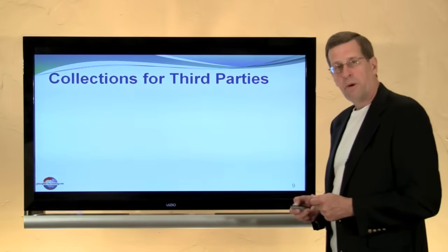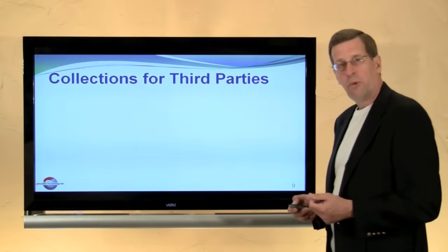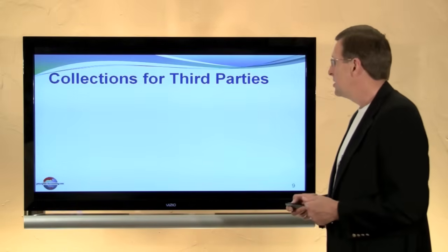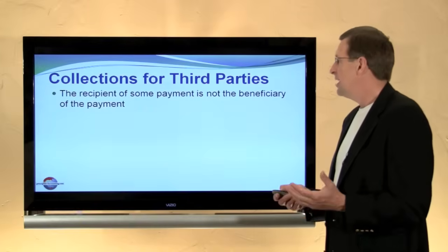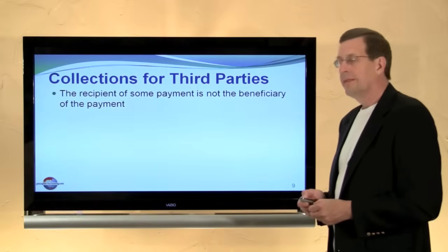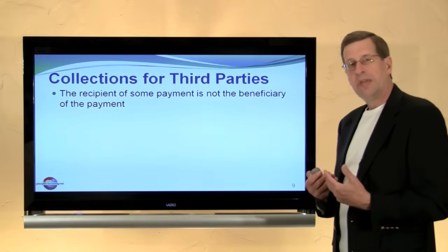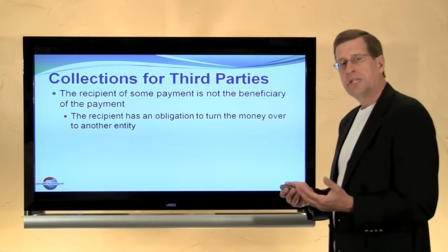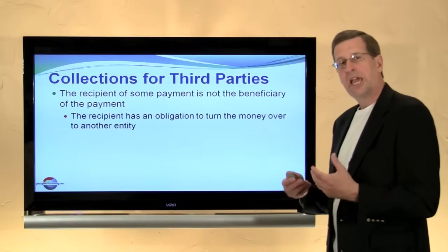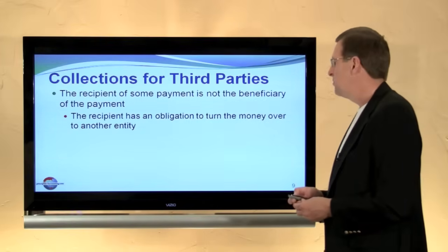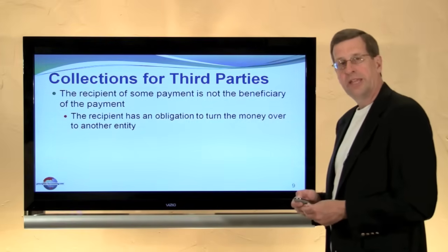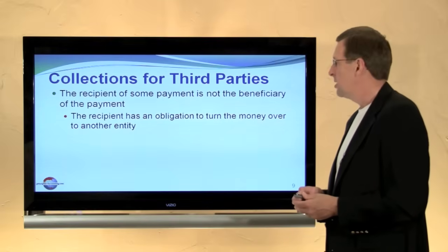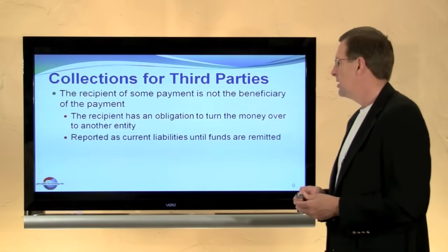Collections for third parties is another important current liability that sometimes may not be considered. This involves the receipt of a payment where the recipient is not the beneficiary — the recipient has an obligation to remit those funds to another entity or party, and those amounts would be shown as a current liability.